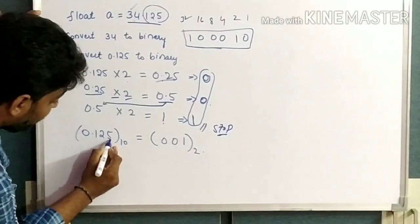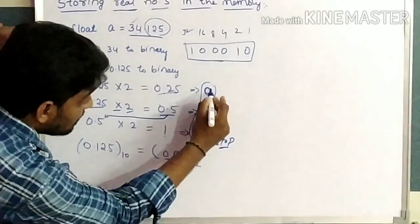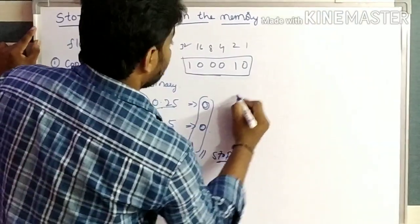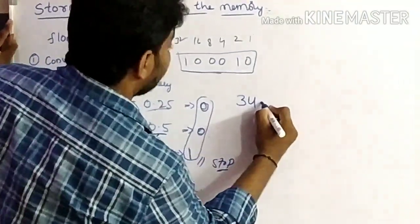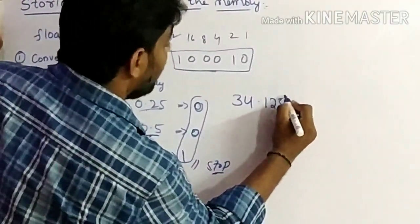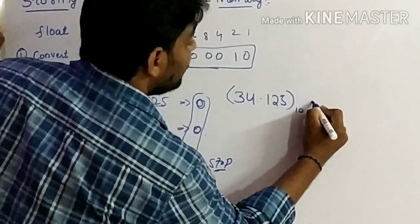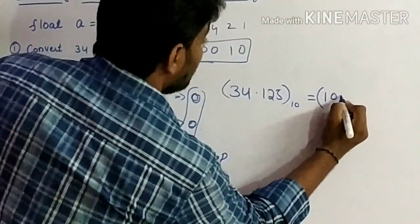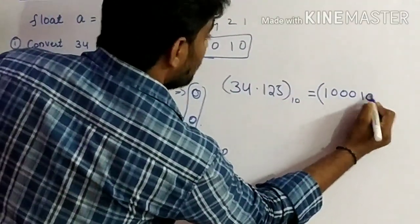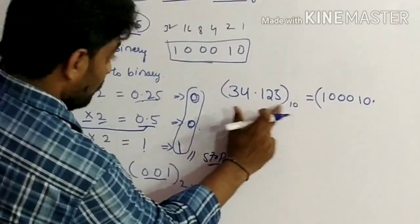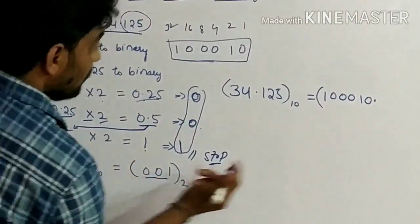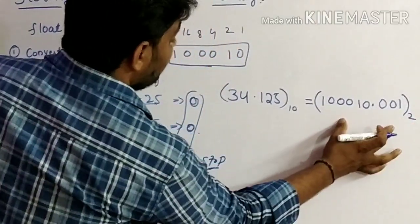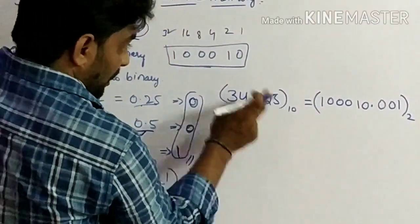So 0.125 converted into binary gives us 0, 0, 1. This is the binary value for 34.125. After conversion, 34 in binary is 100010 and the fractional part .001, giving us 100010.001 as the full binary value for 34.125.